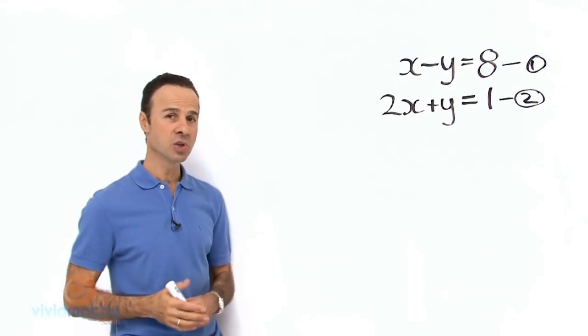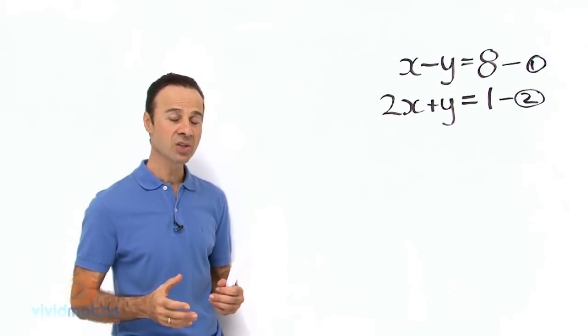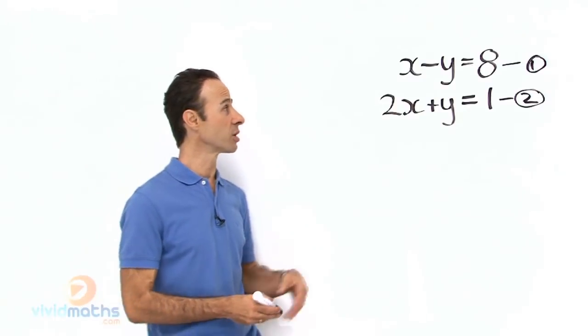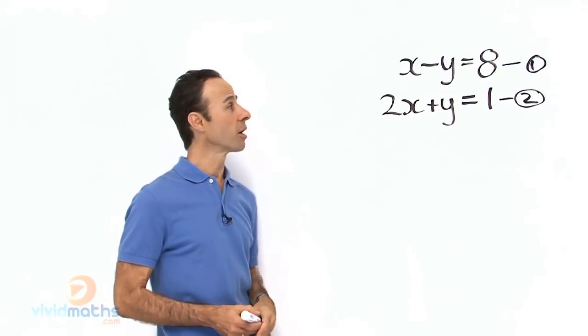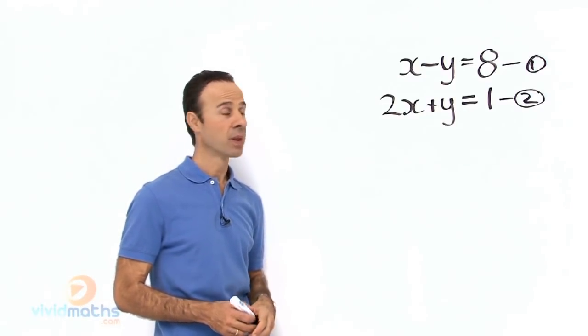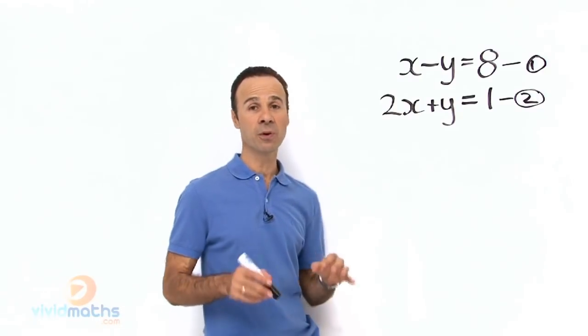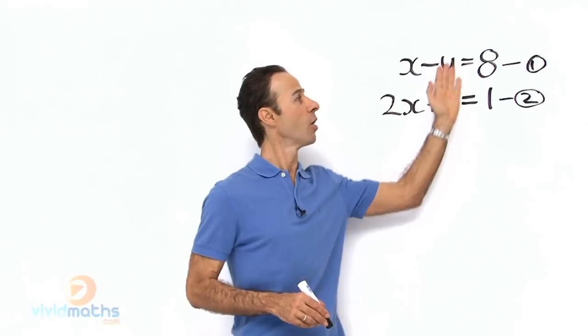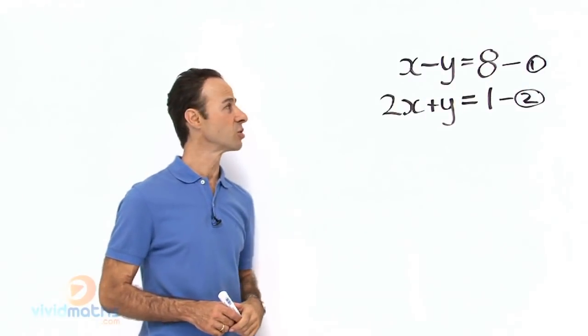With substitution method we take one of the equations and we make one pronumeral the subject. In other words, I am going to look at the top one which is easier, and I am going to make x the subject. If you recall how to do that from linear equations, all we need to do is move the y over to the side of the 8.